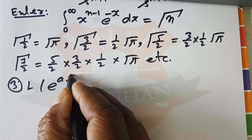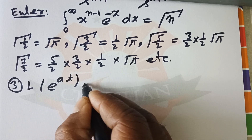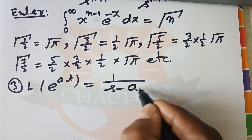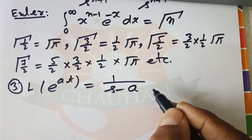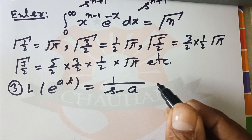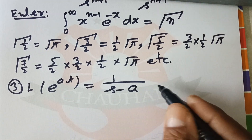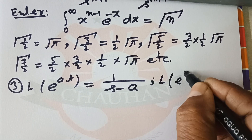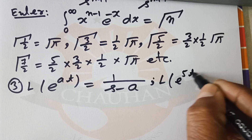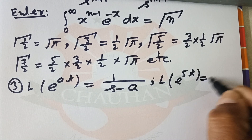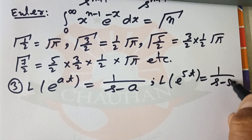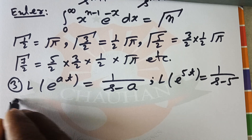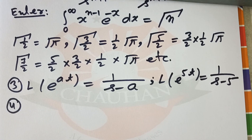Formula number 3: L{e^(at)} = 1/(s - a), where a is some constant. For example, L{e^(5t)} = 1/(s - 5).